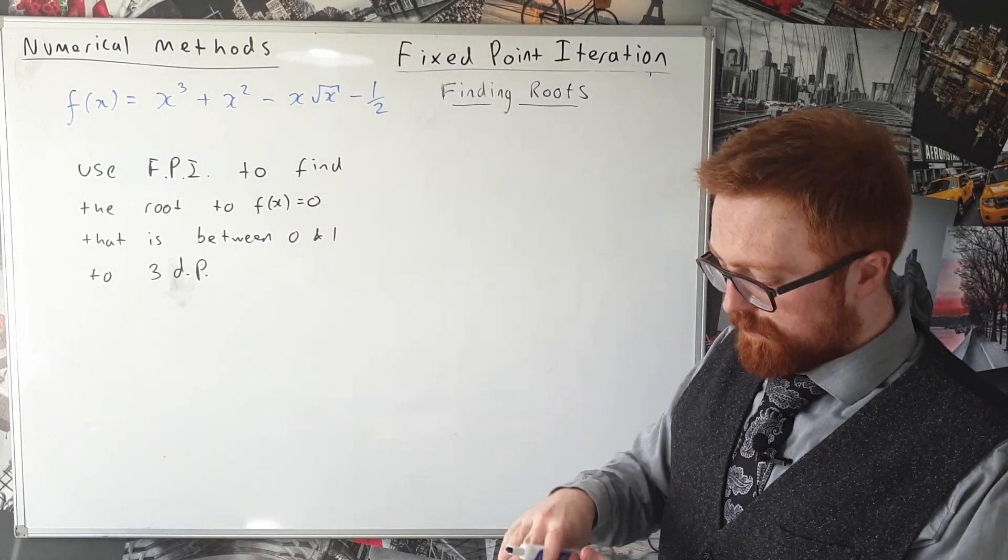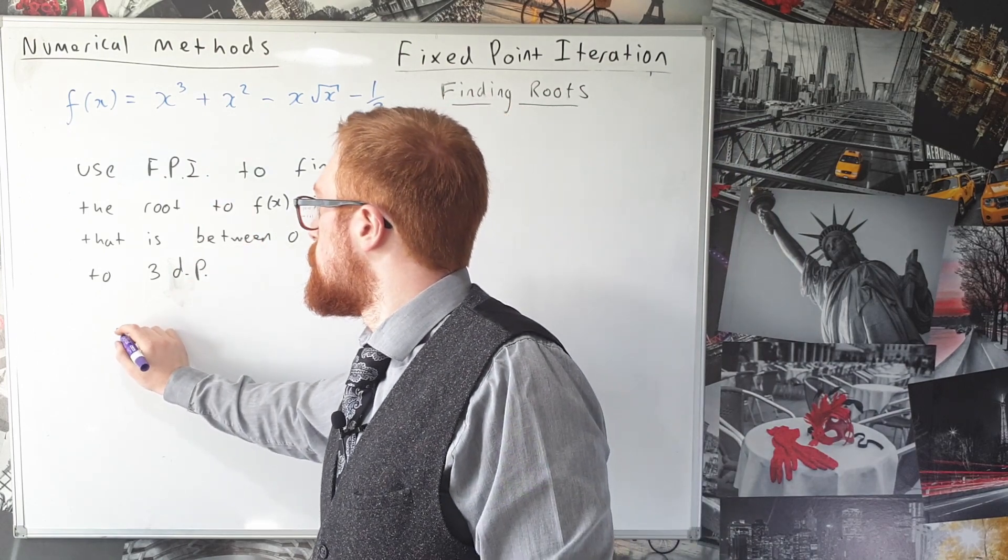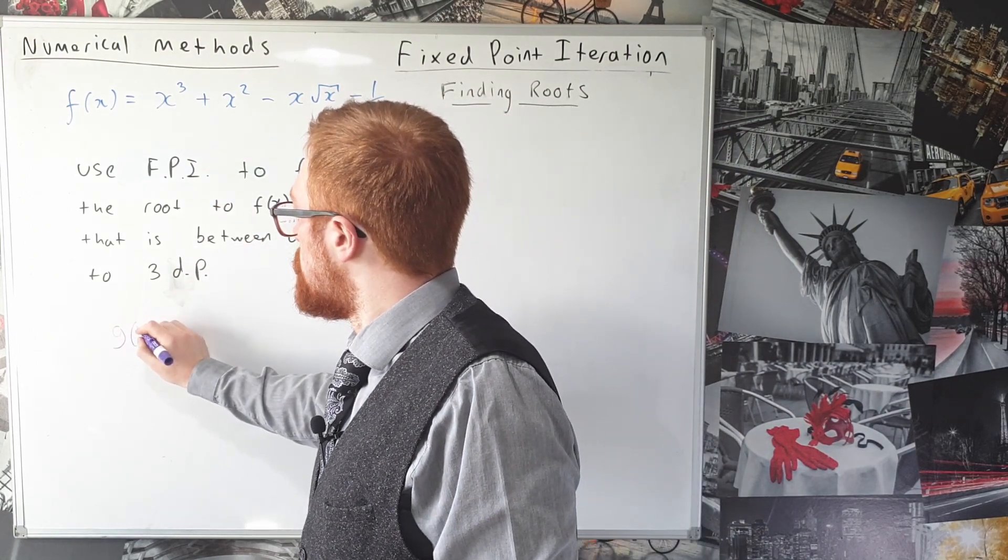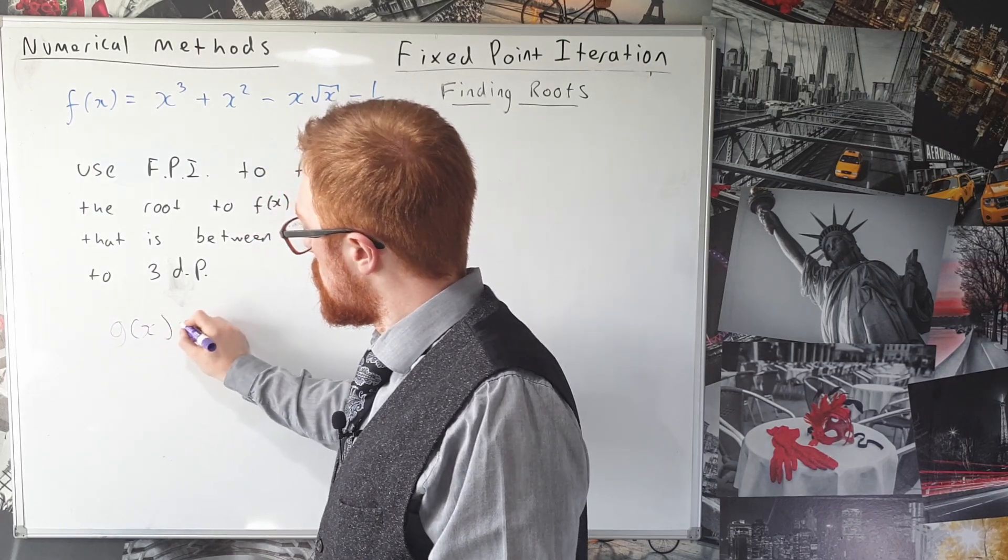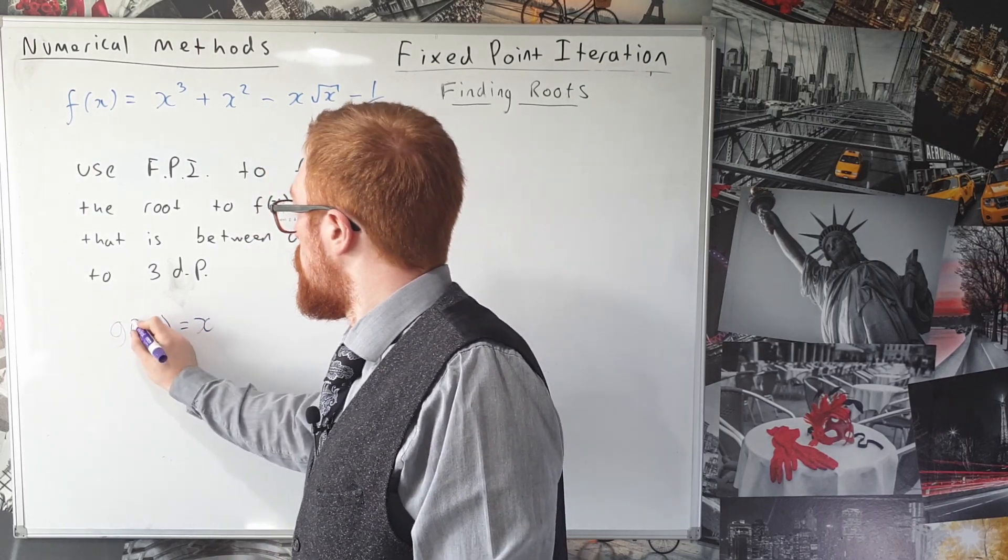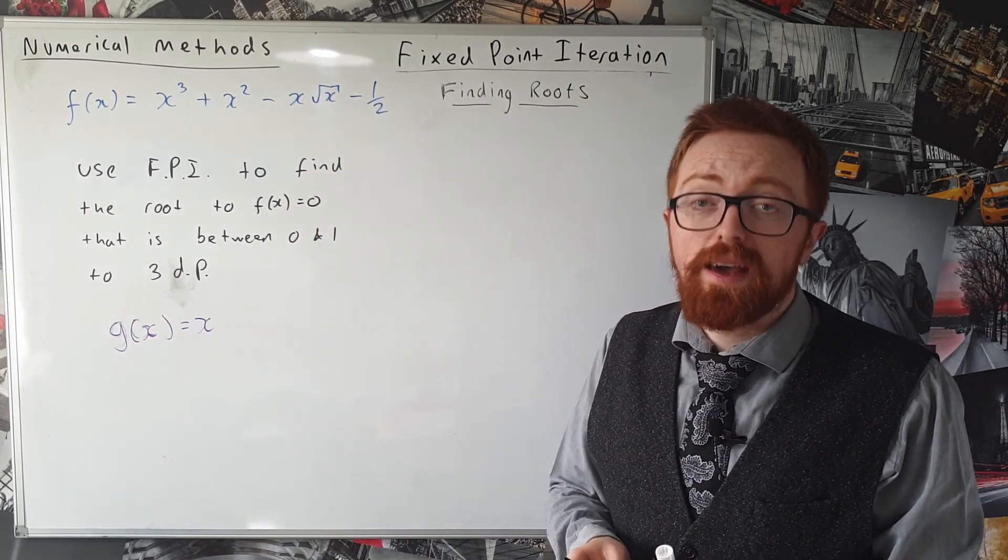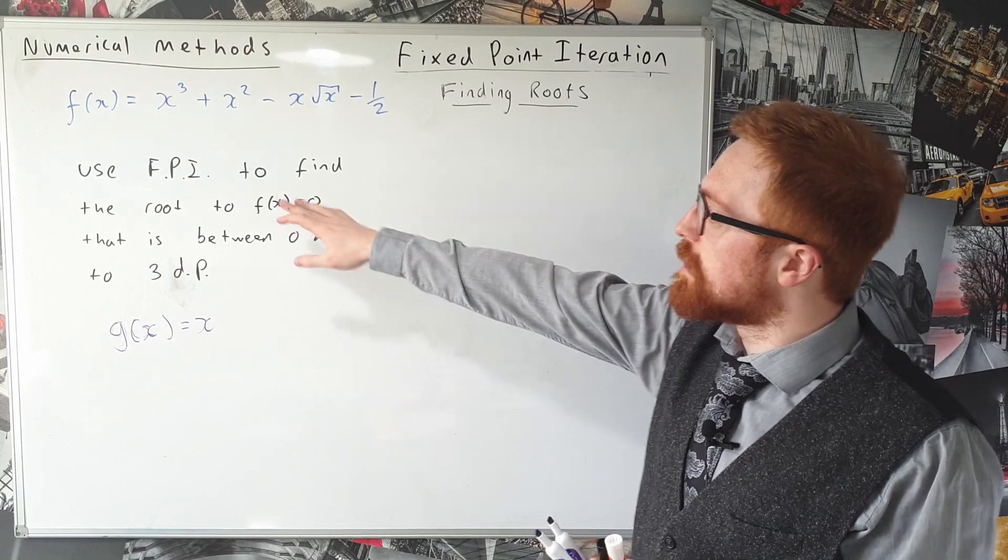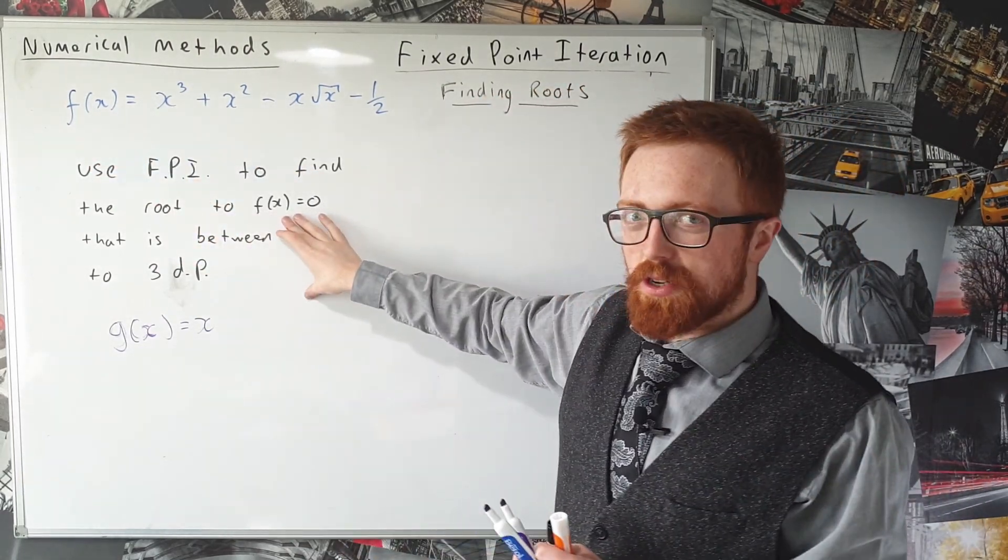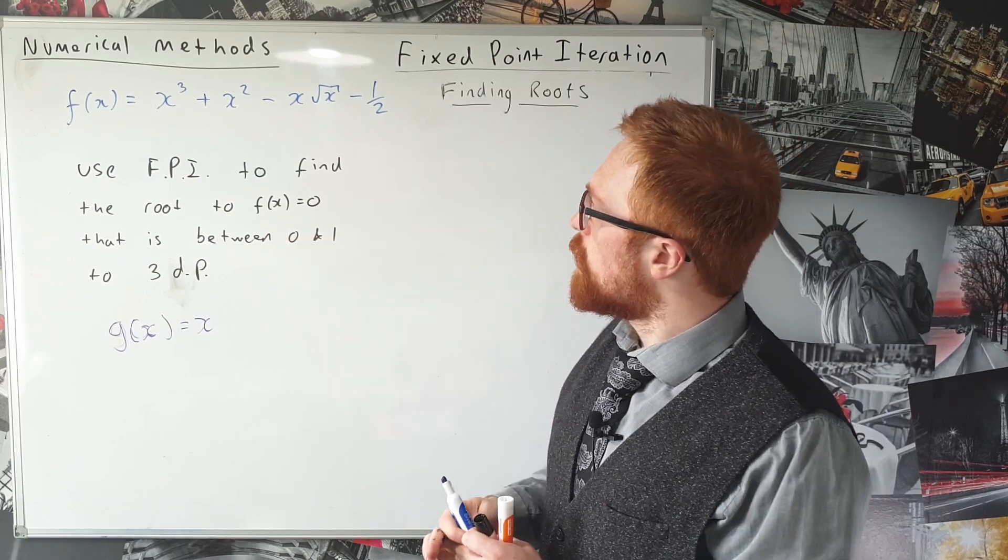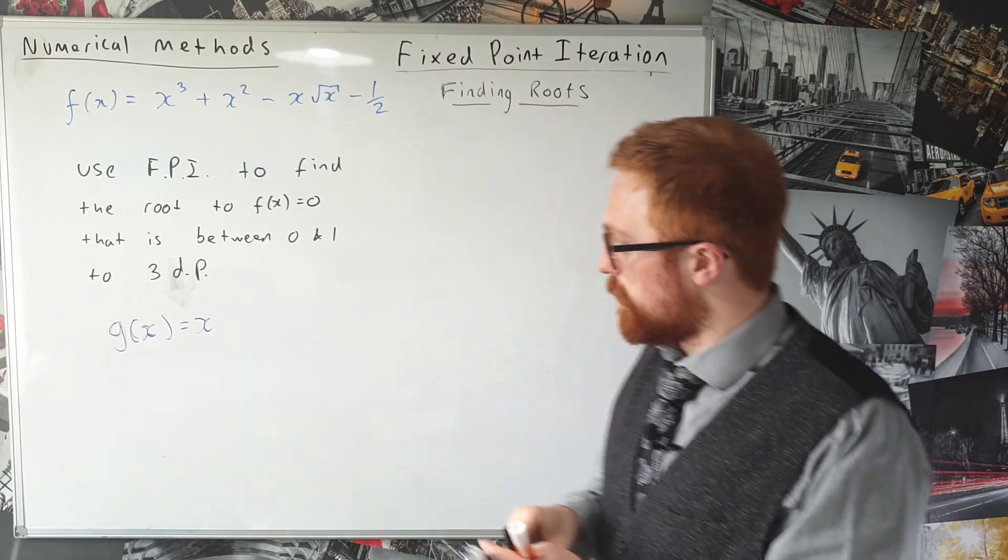Now you may recall from the last video that fixed point iteration finds the solution to g(x) equals x. The problem here is we're not trying to find our function equal to x, we're trying to find our function equal to zero, and what we need to do is rearrange this and try to get it into this form first of all.